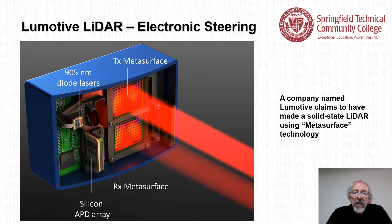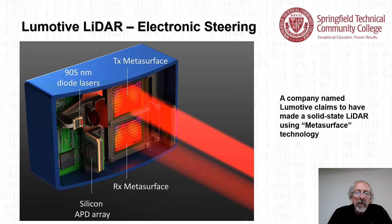Metasurfaces are surfaces that can change their characteristics. The Lumotive LiDAR uses a 905 nanometer diode laser, which is infrared — we would not be able to see the 905 nanometer infrared signal with our eyes.